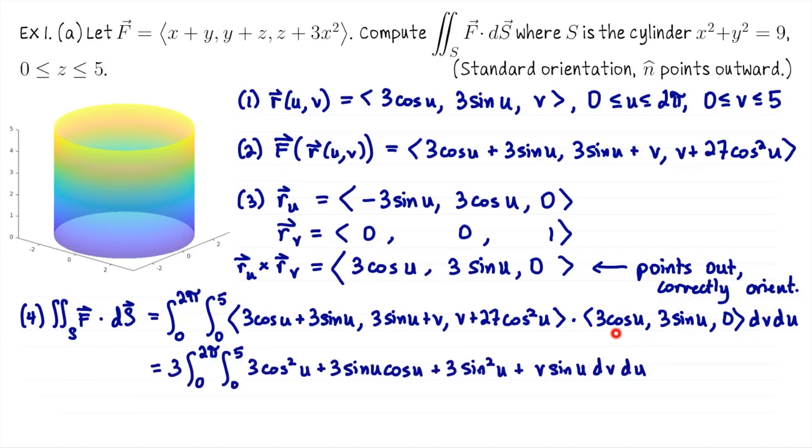Take it a little further. I'm going to pull the 3 out, and we get 3 times the integral from 0 to 2π, 0 to 5, of 3cos²u + 3sin²u plus other terms dv du. That's going to be 3. And since we're integrating from 0 to 2π, the sine u cosine u is going to integrate to 0 as is the sine u in the final term. We're left with 3 times the double integral from 0 to 2π, 0 to 5, 3 dv du. This is now just a volume computation. So that's 9 times 2π times 5, or 90π.